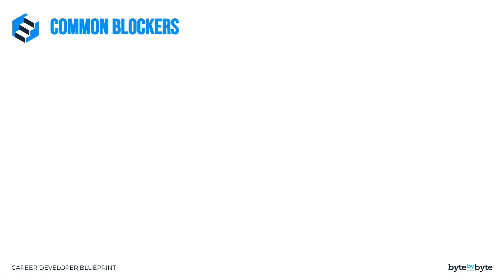I know there are some common blockers for actually implementing the DuckDuckGo strategy, so let me address some directly. First: I don't have time to do more. Maybe, maybe not. Remember, we need to focus on the things we have control over. You could work more, but what else could you do? Could you delegate? Could you get buy-in to work on these other projects? Can you get increased priority? Could you shift how you're focusing your time? There are lots of ways to identify more time within your job.